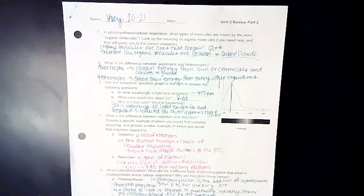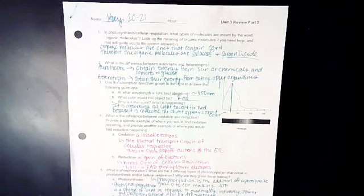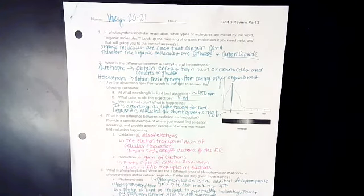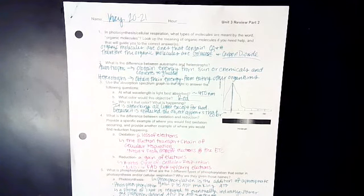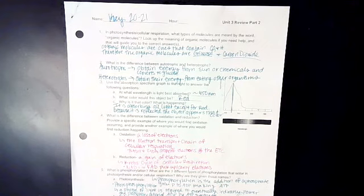The difference between autotrophs and heterotrophs. Autotrophs obtain energy from either sun or chemicals and convert that to glucose. So the ones who obtain their energy from the sun are going to be photoautotrophs. The ones who obtain their energy from chemicals are chemoautotrophs. And heterotrophs obtain their energy from eating other organisms.